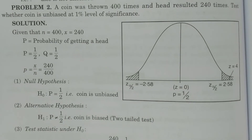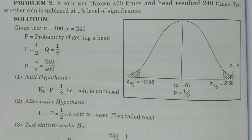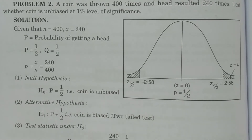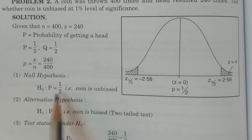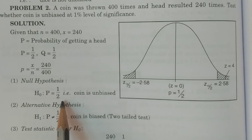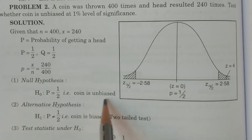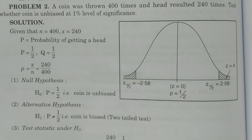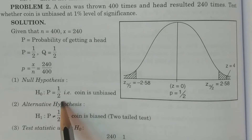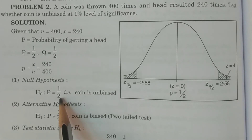There are four particular points for conducting any test procedure: null hypothesis, alternative hypothesis, test statistic under H₀, and comparison and conclusion. For the null hypothesis, H₀: capital P = 1/2, that is P₀ = 1/2. This means the coin is unbiased.